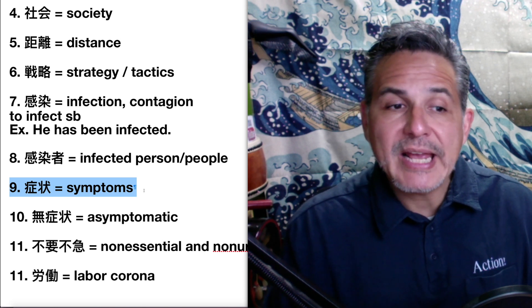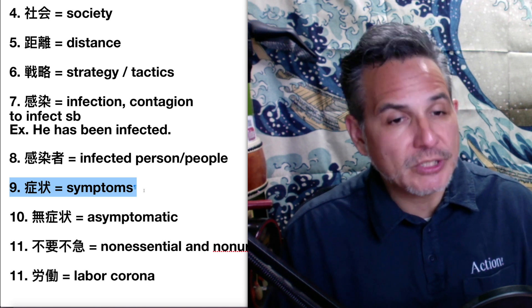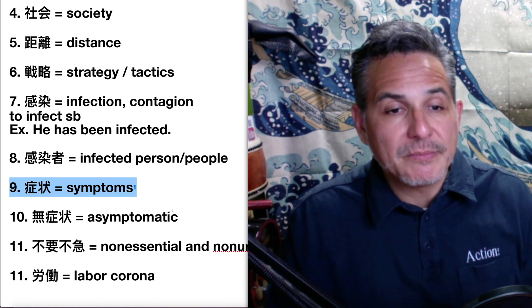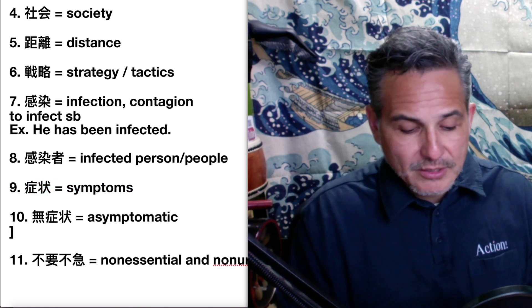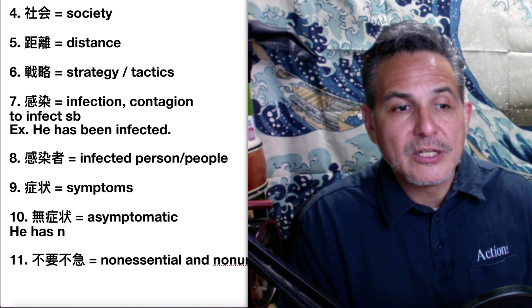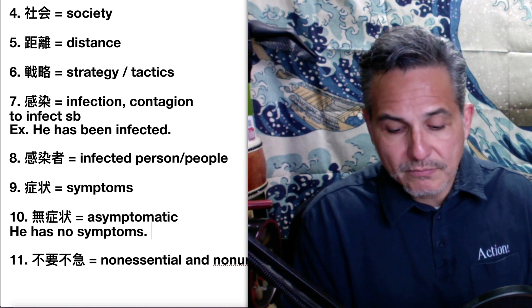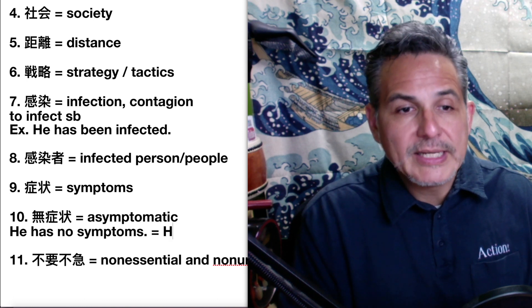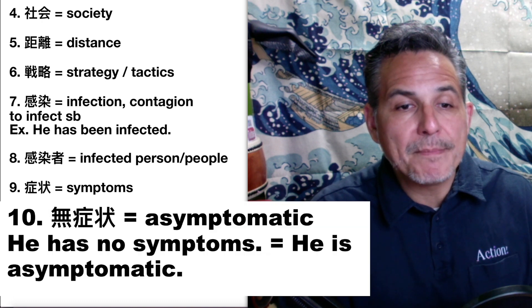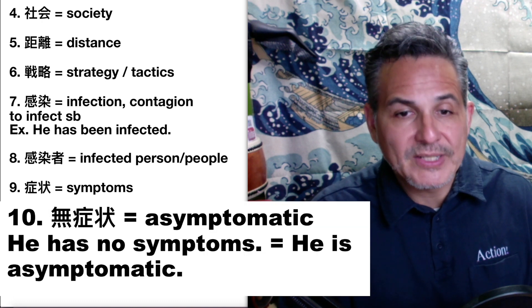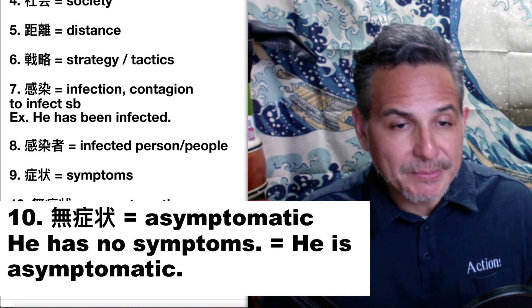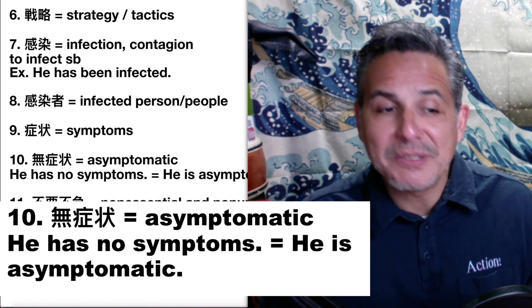Number ten: some people show no symptoms. You can say he has no symptoms, or she has no symptoms. Or: he is asymptomatic — and that's an adjective. Asymptomatic.